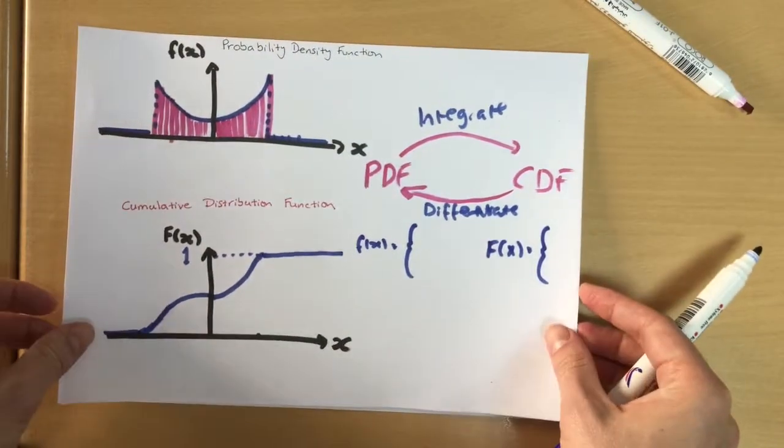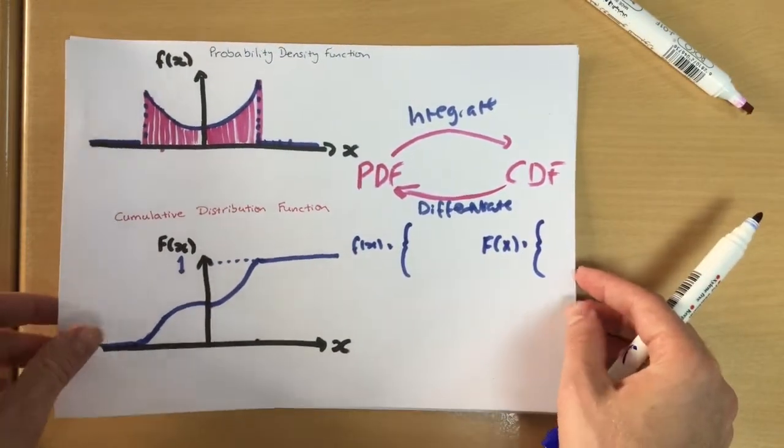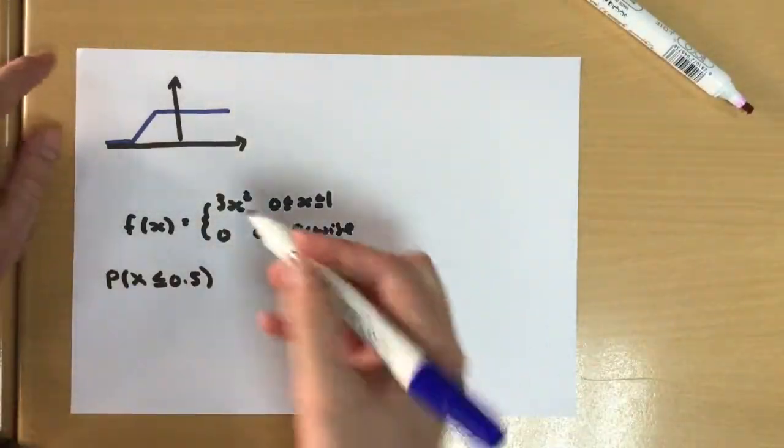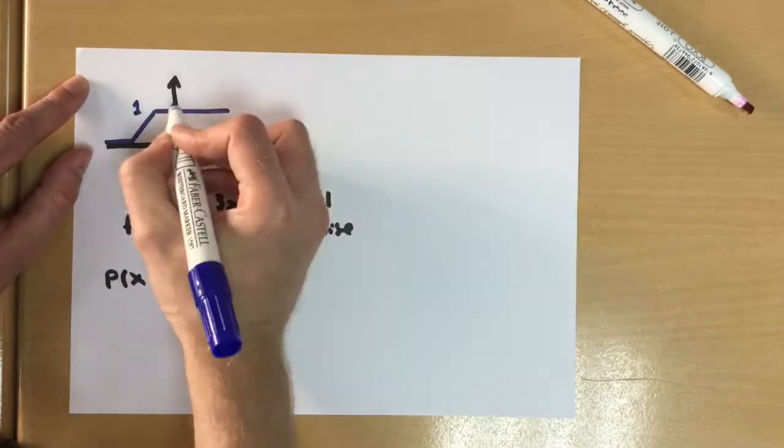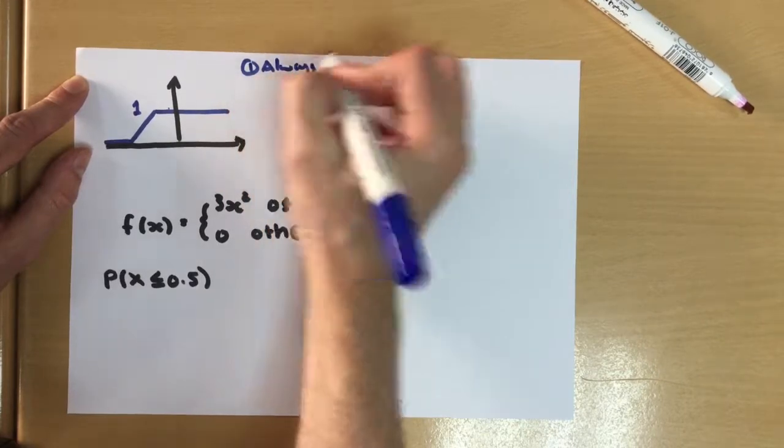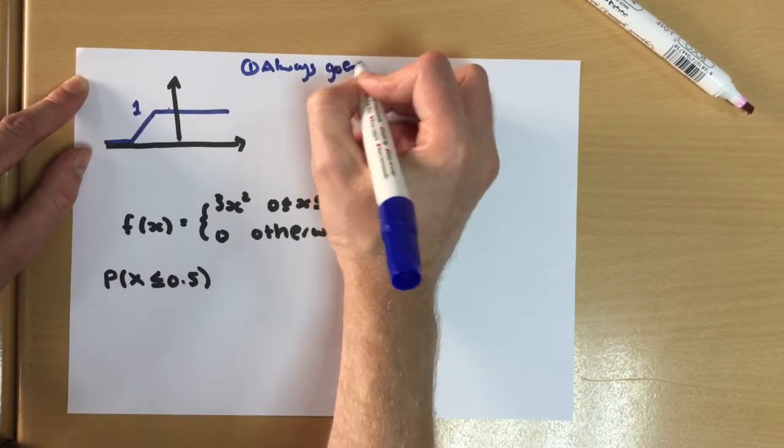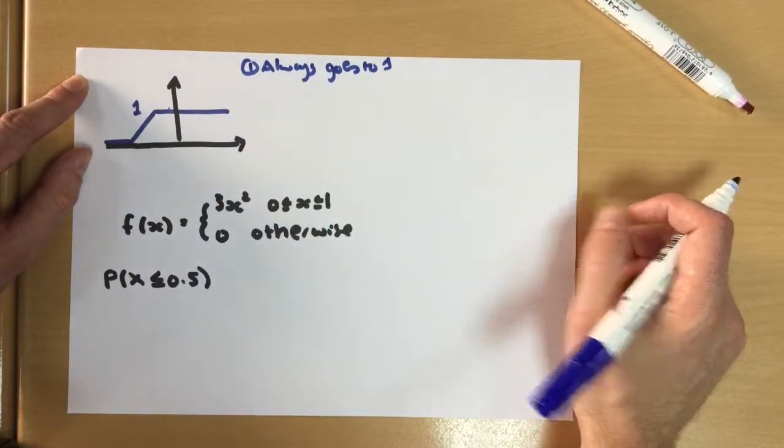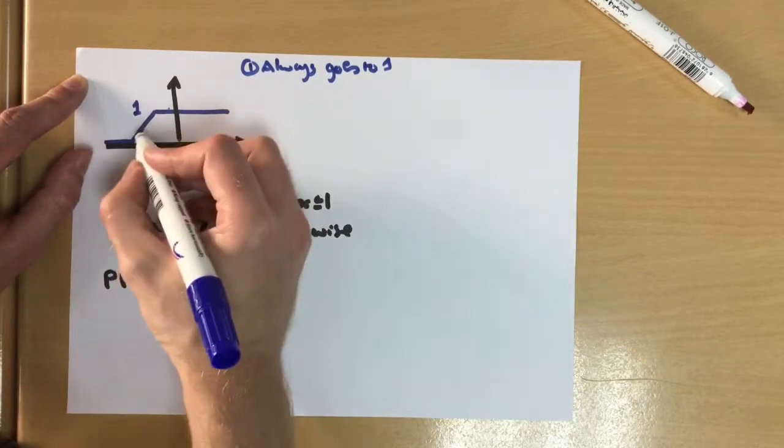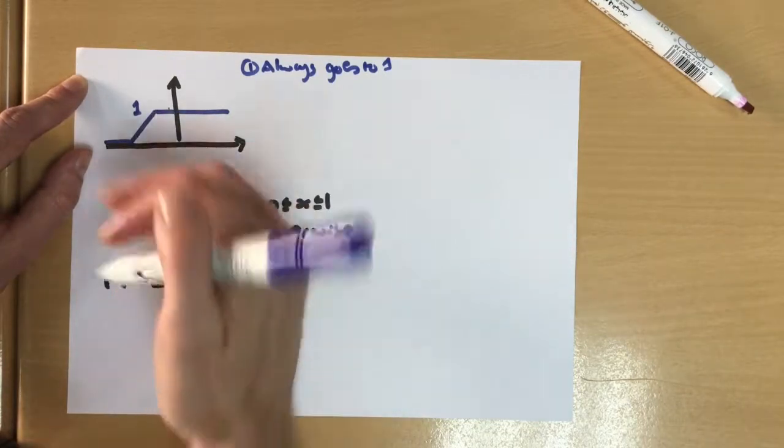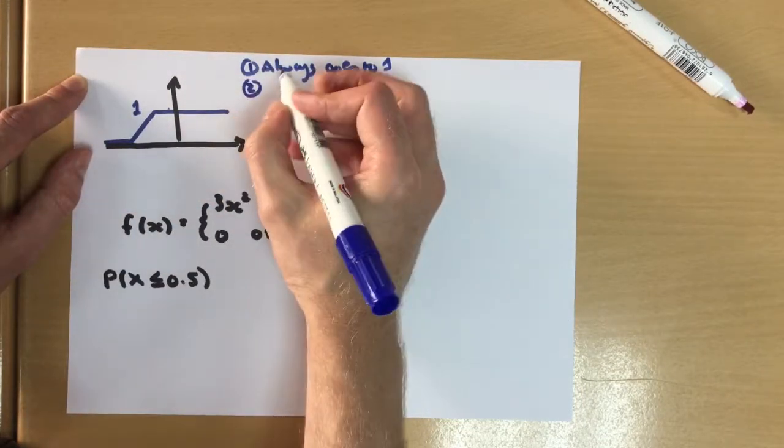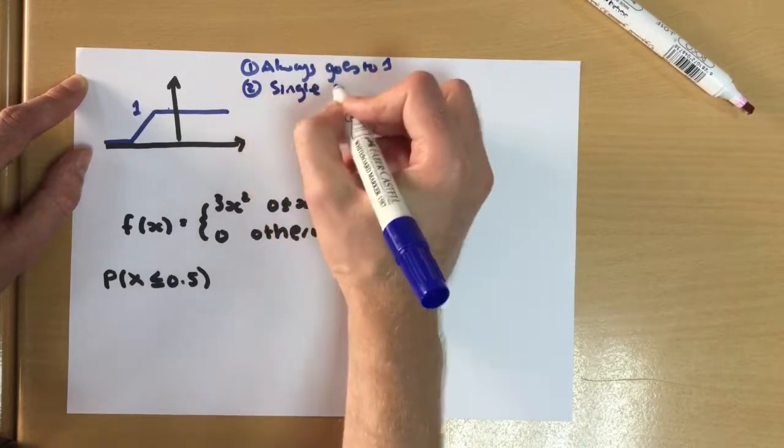Now, there's a few properties involved in our cumulative distribution function. The first one being that it will always rise to the maximum value of one. So it always goes to one and no further. The other thing is we can't have gaps in this line. It can't jump around. It must be one continuous line.